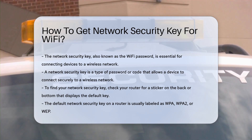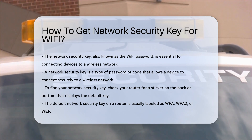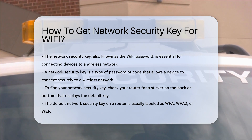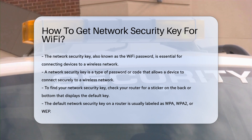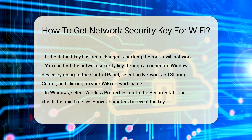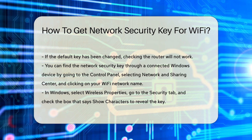To find your network security key, you can start by checking your router. Most routers have a sticker on the back or bottom that displays the default network security key. This key is usually labeled as WPA, WPA2, or WEP. If you have changed the default key, this method will not work.